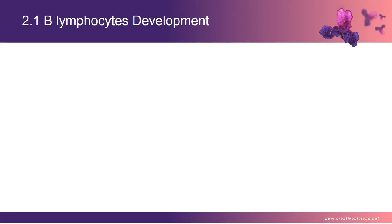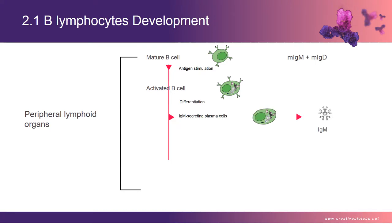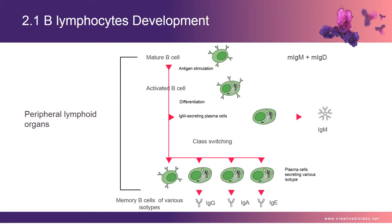B-cell activation occurs in the secondary lymphoid organs (SLOs) such as the spleen and lymph nodes. After B-cells mature in the bone marrow, they migrate through the blood to SLOs, which receive a constant supply of antigen through circulating lymph. Mature B-cells are activated by antigen stimulation and differentiate into IgM-secreting plasma cells. Each cellular clone produces isotypes of the same class specific for a given antigen. During the evolution of immune responses, there is class switching in Ig classes from IgM to IgG, IgA, and IgE, and one fraction of the B-cell progeny develop into memory B-cells.